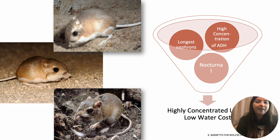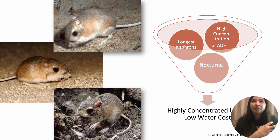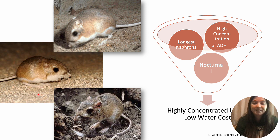Here we have the kangaroo rats. You may have seen them if you've ever gone through the California deserts — they hop around like little kangaroos. They actually have the longest nephrons, which can reabsorb water very efficiently. They do not need to drink as much water, which is good because they live in the desert. This is an incredibly cool adaptation that allows them to stay hydrated and take water from wherever they can get it, like from what they're eating. I recommend looking these guys up — there are videos of them fighting rattlesnakes.